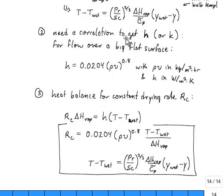The next thing we need to do is to use a correlation to get the actual heat transfer coefficient or we could start with the mass transfer coefficient because we have Chilton-Colburn here. Here is a correlation that describes that situation pretty well. It's for flow over a big flat surface. This is going to give me a heat transfer coefficient per unit area. We have 0.0204 times rho times V raised to the 0.8 power. The rho V has to be plugged in for this correlation in kilograms per meter squared per hour. That's going to give us a heat transfer coefficient in watts per meter squared per Kelvin.